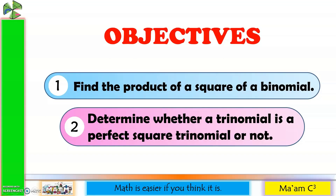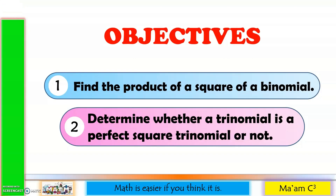Our objectives in this lesson are the following: find the product of a square of a binomial, and determine whether a trinomial is a perfect square trinomial or not.